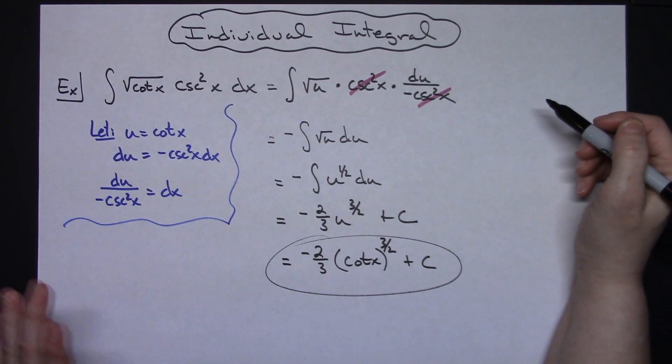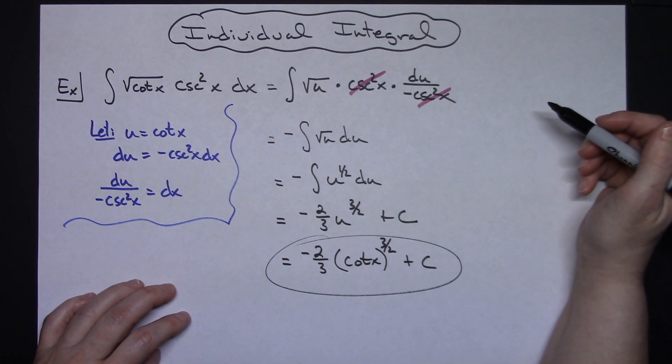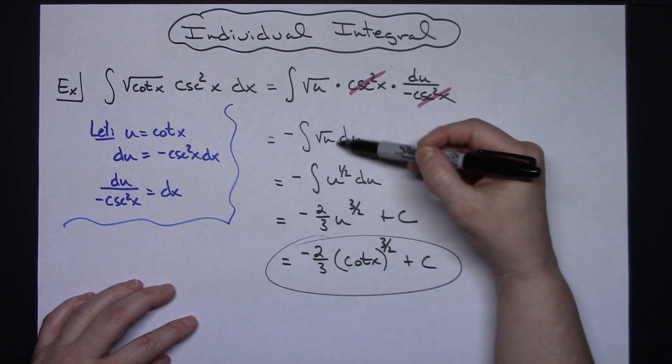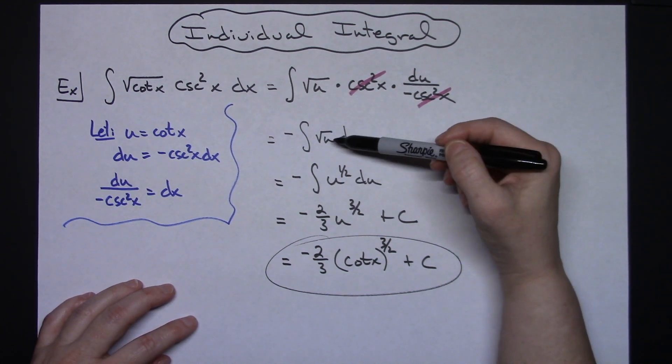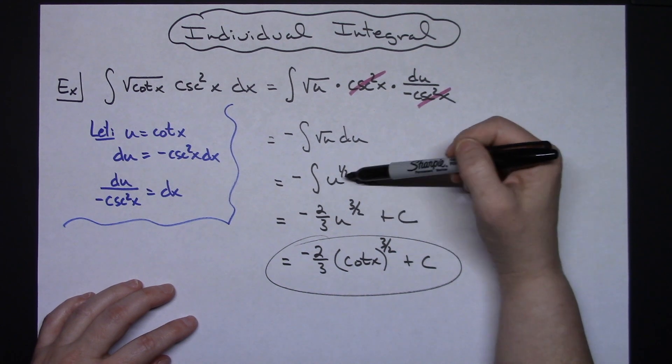So definitely a very straightforward u substitution there on that integral. About the only thing that you might need to remember there would be turn that radical into that fractional exponent so that it makes it easier to integrate.